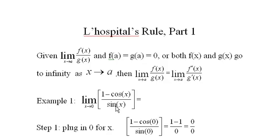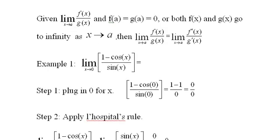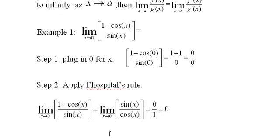In other words, I'm going to take the derivative of this over the derivative of this and try the limit again. So we apply L'Hopital's Rule, and when we do that, we get the limit of sine x over cosine x as x heads to 0.